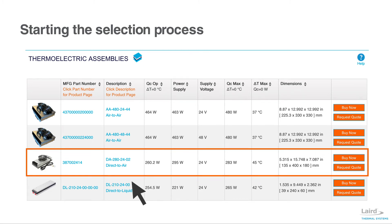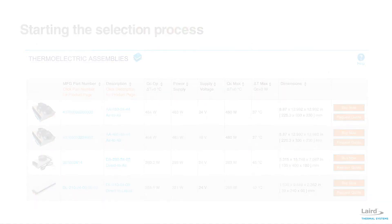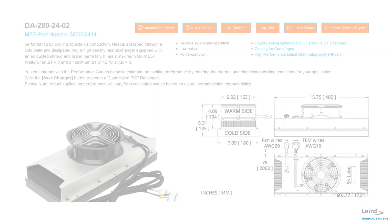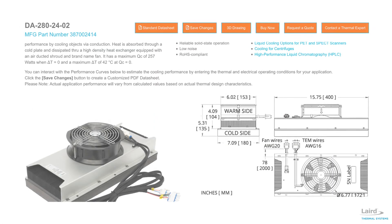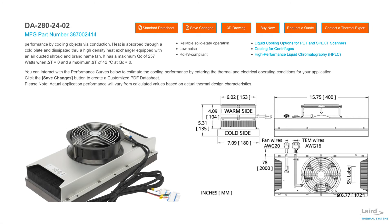Next, we will click this part number and access the active datasheet. If we need samples for engineering evaluation, we can check stock by clicking the Buy Now button. Now we will take this general recommendation and verify that it meets our specific application.